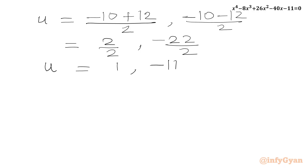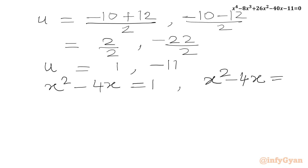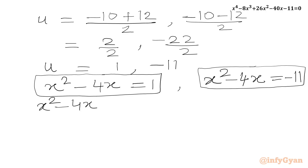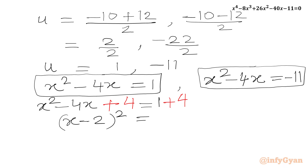So we have two u values: u = 1 and u = -11. Since u = x² - 4x, we write two equations: x² - 4x = 1 and x² - 4x = -11. We use completing the square. For the first equation: x² - 4x = 1, we add 4 to both sides. On the LHS, x² - 4x + 4 gives us the perfect square (x - 2)². The RHS becomes 5.